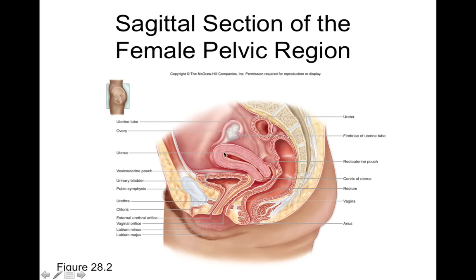Just posterior to the uterus and vagina, we have the rectum, which leads into the anus. We have external and internal anal sphincters, which we discussed back in the digestive system.